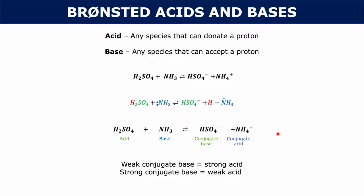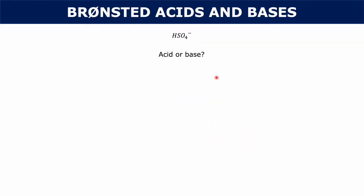Before we talk more about the strengths of acids and bases, let's look at a certain compound — the sulfate ion. If I just gave you this sulfate ion and its chemical formula, would you be able to tell me whether or not it's an acid or a base? Can you tell me whether it donates a proton or accepts a proton? The answer is no — whenever you're just given a compound, you can't really tell whether it's an acid or a base because you have to see how it reacts in a chemical equation.